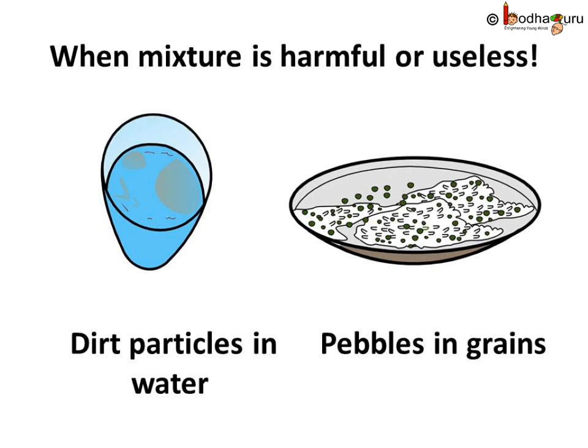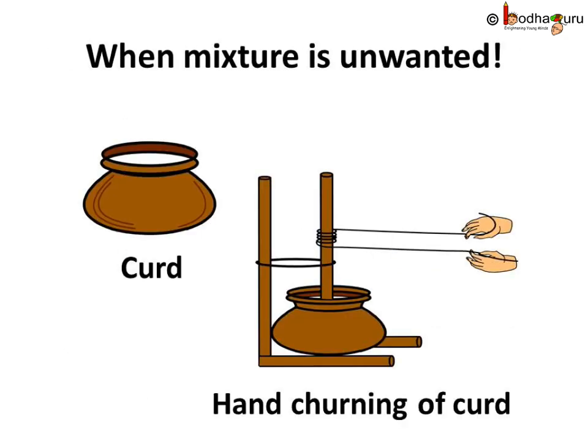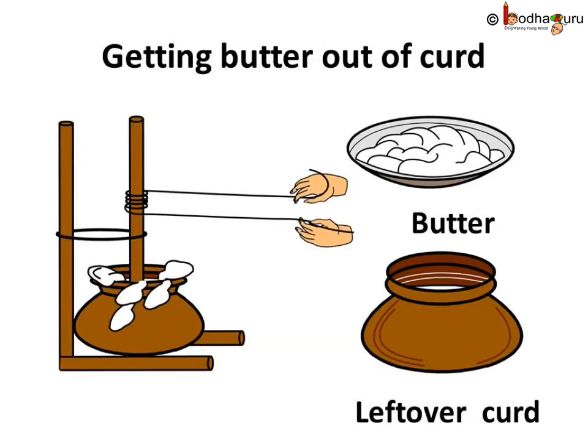Like, remove the impurities from water or remove pebbles from the grains, etc. Not only harmful mixtures like impure water — sometimes useful mixtures can also be unwanted. For example, curd is useful for us, yet people churn the curd to get butter from it.